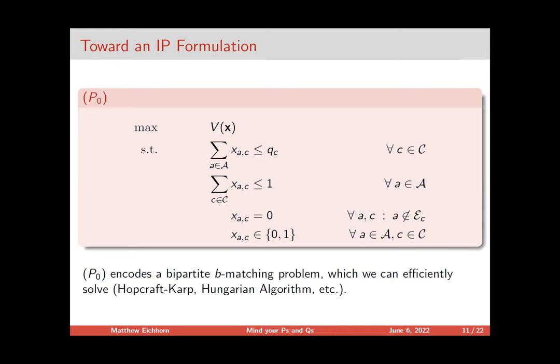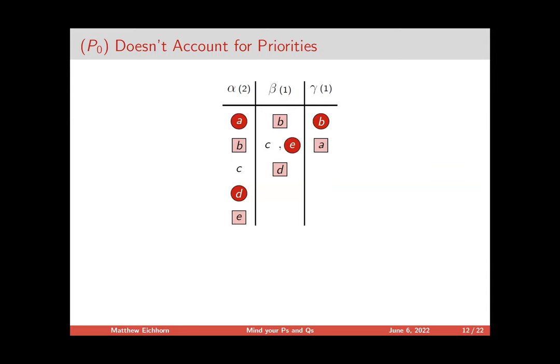The problem is we've done nothing to address the priorities — they don't appear in the formulation at all. Here is a solution to the LP that gives out all units and meets all IP constraints, but it isn't respectful of the priorities: category alpha gave to D while C remained unallocated. So this causes a problem.